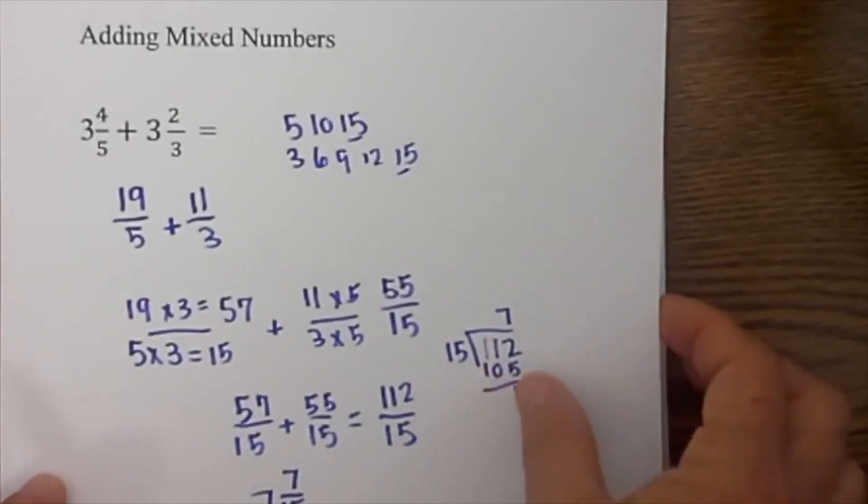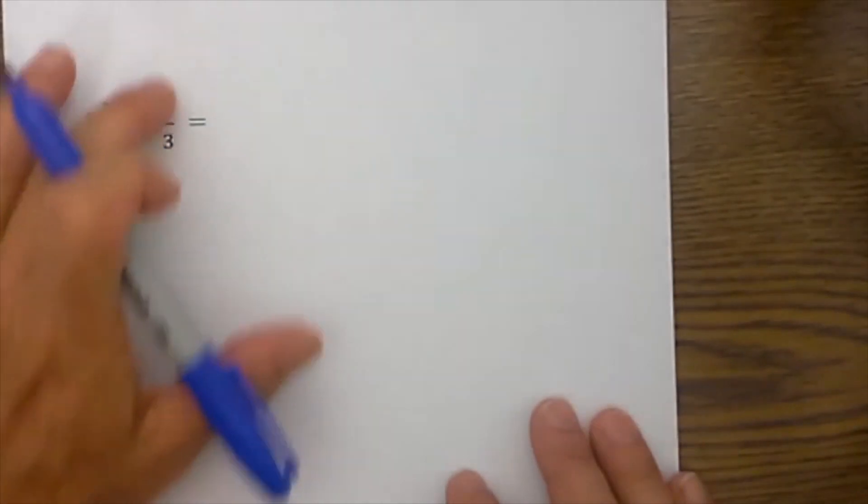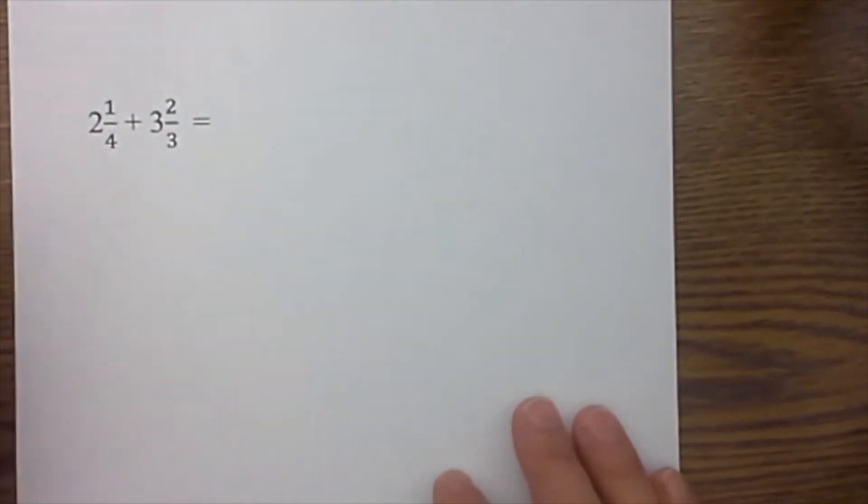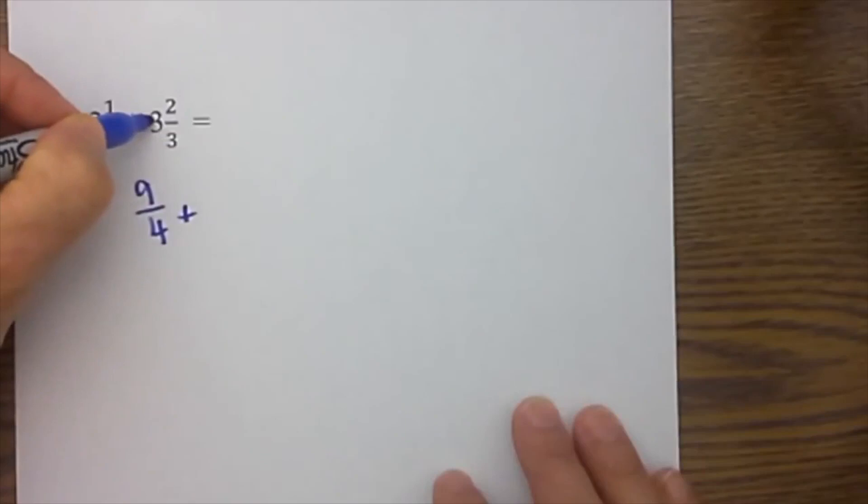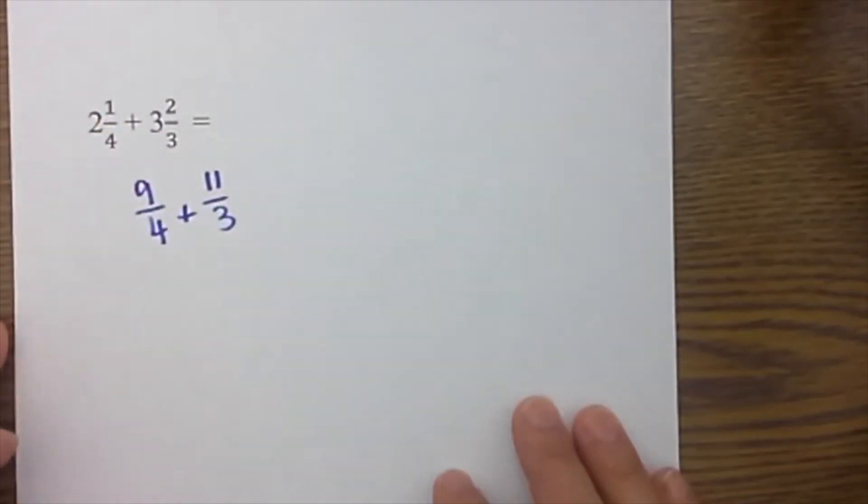Let's work another example. In this particular example, we have 2 and 1/4 plus 3 and 2/3. First thing I will do is convert it to an improper fraction. 4 times 2 is 8 plus 1, so we have 9/4 plus 3 times 3 is 9 plus 2 is 11/3.